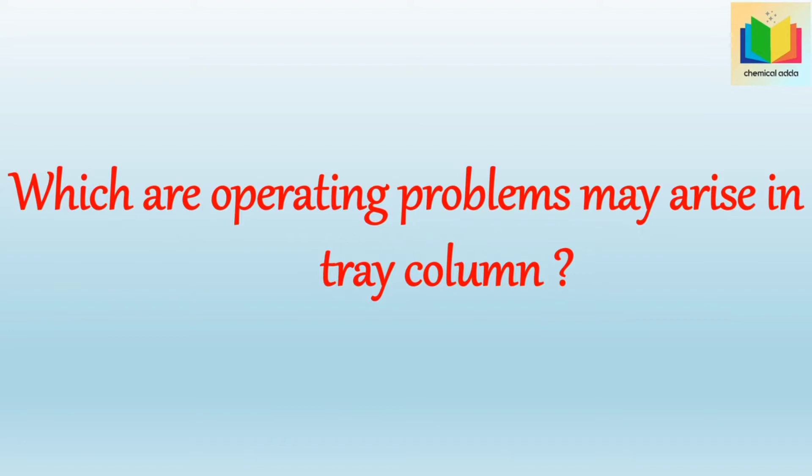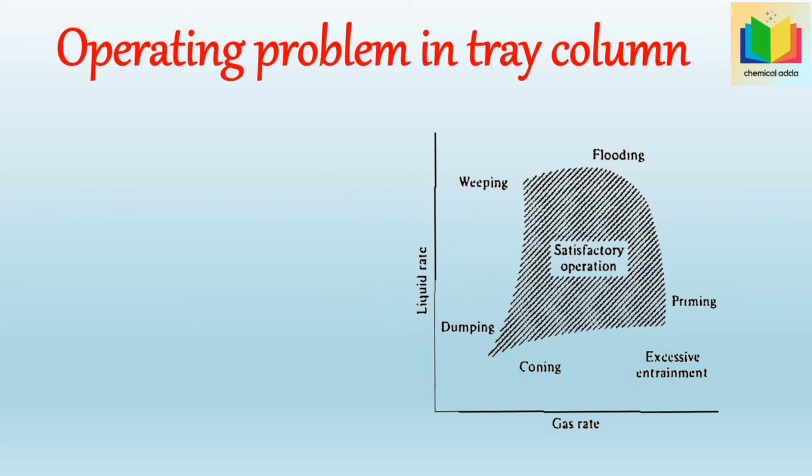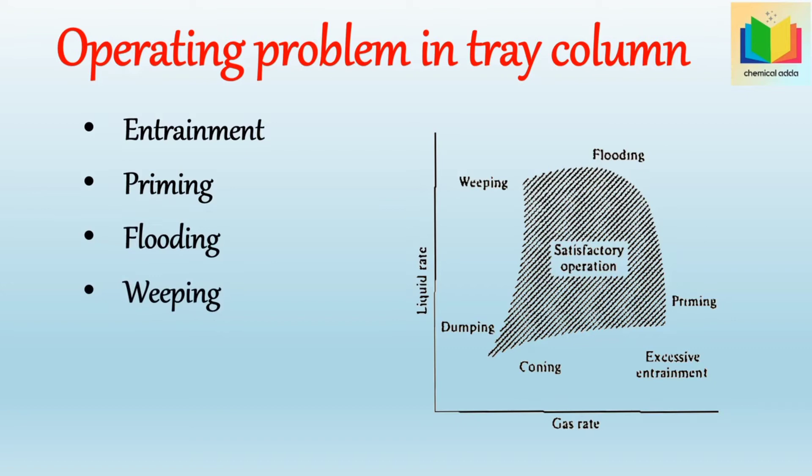Which are the operating problems that may arise in the tray column? The operating problems that may arise in the tray column are: entrainment, priming, flooding, weeping, dumping, and coning.